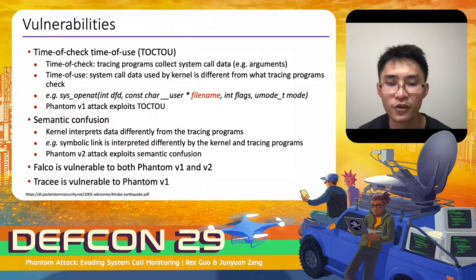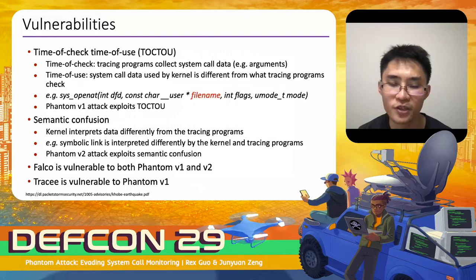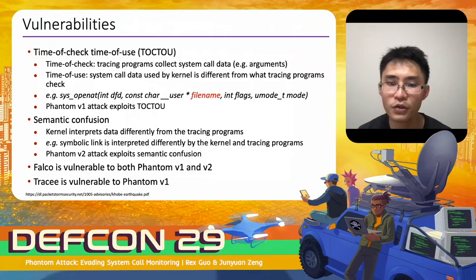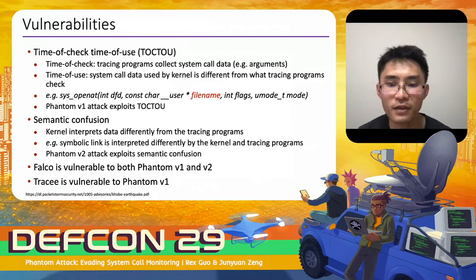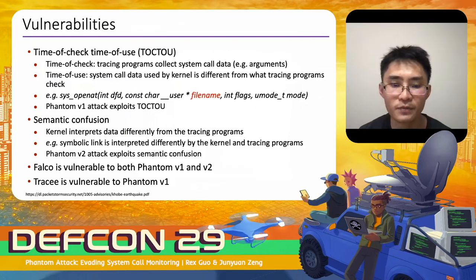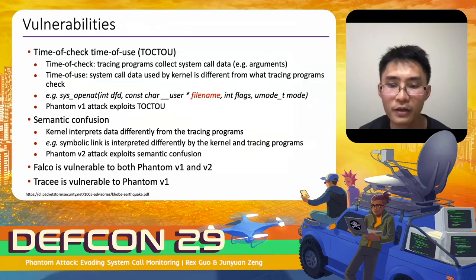The first vulnerability is time-of-check, time-of-use (TOCTTOU). During time-of-check, tracing programs collect syscall data. During time-of-use, the syscall data used by the kernel differs from what the tracing program checked. Using the open syscall as an example, the second parameter is a filename pointer pointing to user-space buffer, which is vulnerable to modification between time-of-check and time-of-use. We introduce Phantom V1 to exploit the TOCTTOU issue. The second vulnerability is semantic confusion — the kernel interprets data differently from tracing programs, such as symbolic links. We introduce Phantom V2 to exploit semantic confusion.